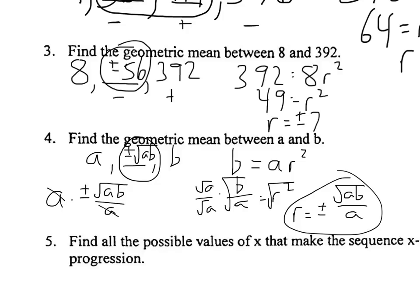That's really what happened in the last example — same problem. I could have done plus or minus the square root of 8 times 392, and if you calculate that you get plus or minus 56.